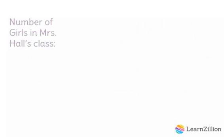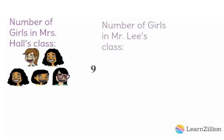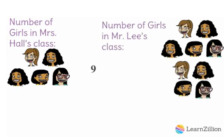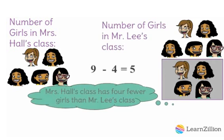We could also compare the number of girls in Mr. Lee and Mrs. Hall's classes using subtraction. Mr. Lee's class has nine girls, and if we took away four girls, we would get five, which is the same number of girls in Mrs. Hall's class. Therefore, Mrs. Hall's class has four less girls than Mr. Lee's class.